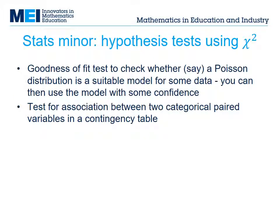Since this unit is about using probability distributions to model data, it seems like a good idea to test whether the model is appropriate. And so the chi-squared test for goodness of fit is introduced, as well as the chi-squared test for association between variables in a contingency table. The emphasis is not on repetitive calculations, but on understanding the principles.